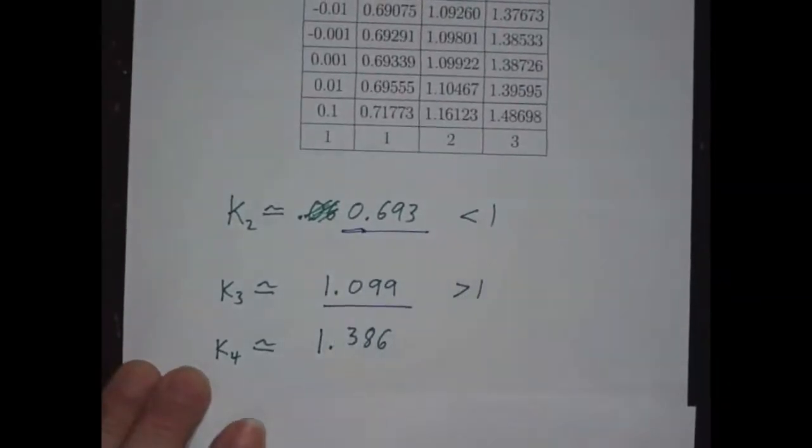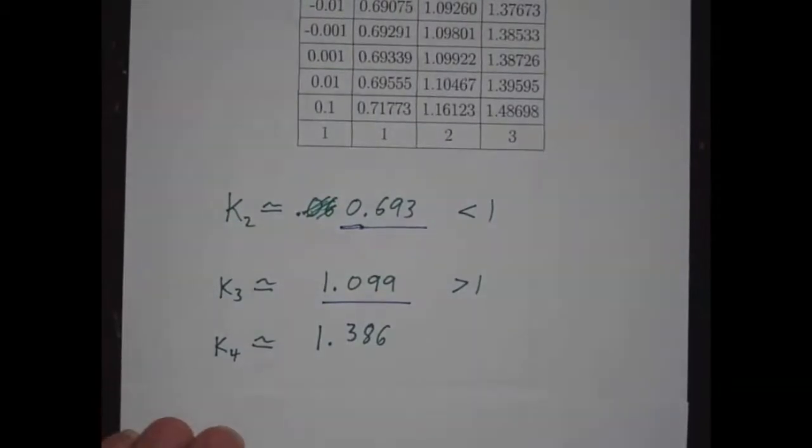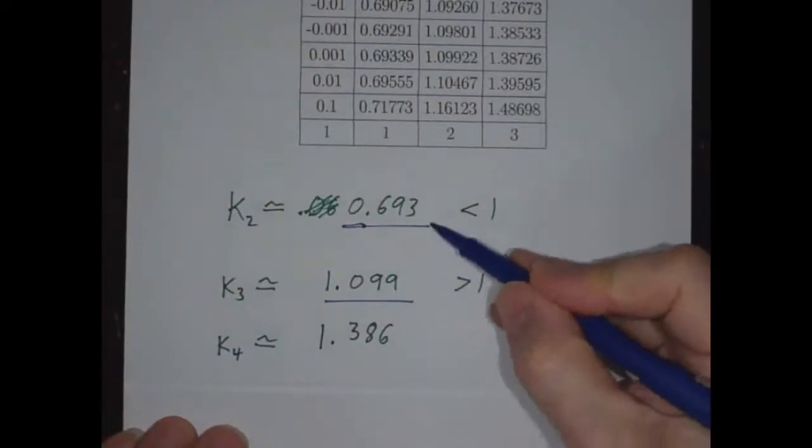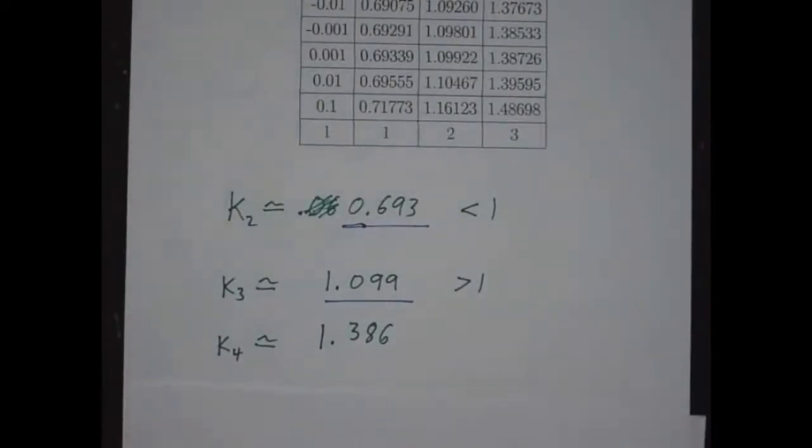And this is bigger than 1. And the bigger a is, the bigger k is. So there's got to be some number between 2 and 3 where the constant is exactly 1.